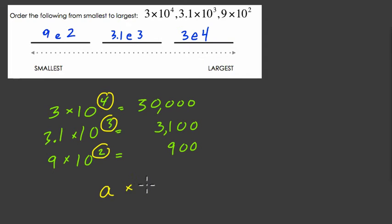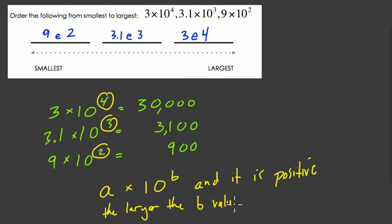So let's say it this way. If we have a times 10 to the b, so you have a number in scientific notation, and it is positive. So let's say this is true.